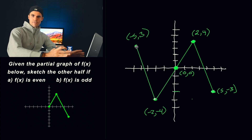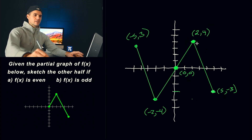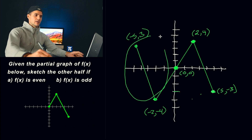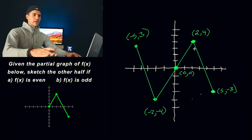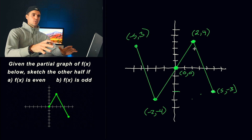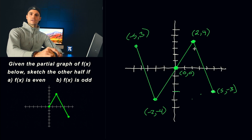That is the graph of an odd function. When we take this half of the function and reflect it over the x-axis and then the y-axis, we end up with the other half. So with these kinds of problems where they give you graphs, you want to get the coordinates of the corner points — however many corners there are — and then work with those coordinates, flipping and reflecting them over the x and y-axis.